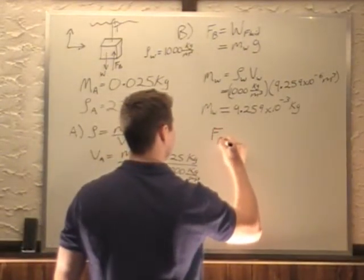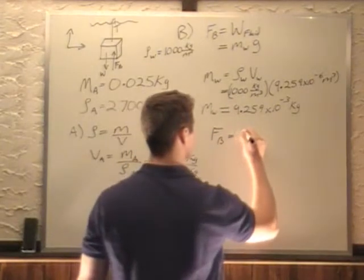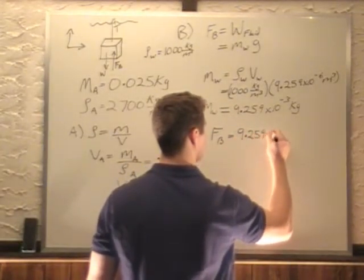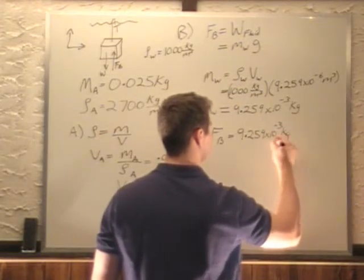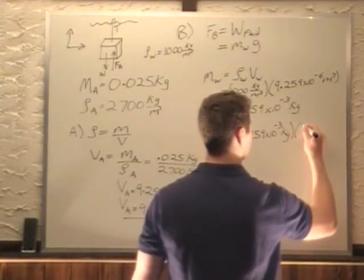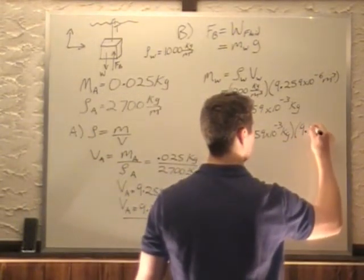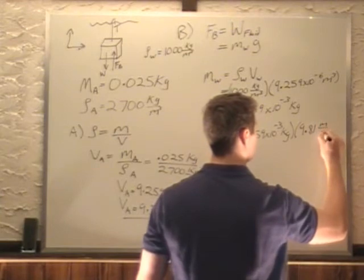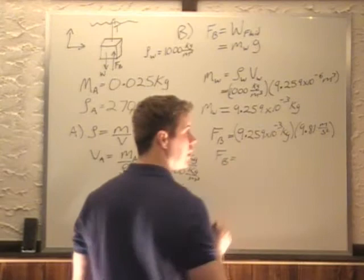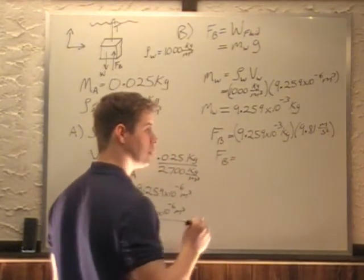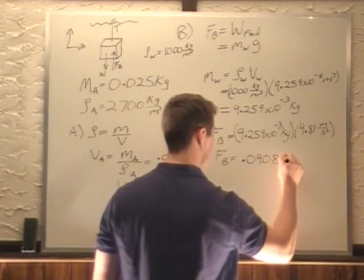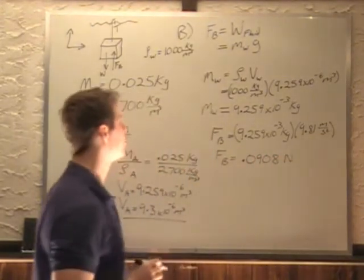We're going to use this in here now. So FB equals our mass, which is 9.259 times 10 to the minus 3 kilograms, times by g, which is 9.81 meters per second squared. Our buoyancy force now is equal to 0.0908 newtons.